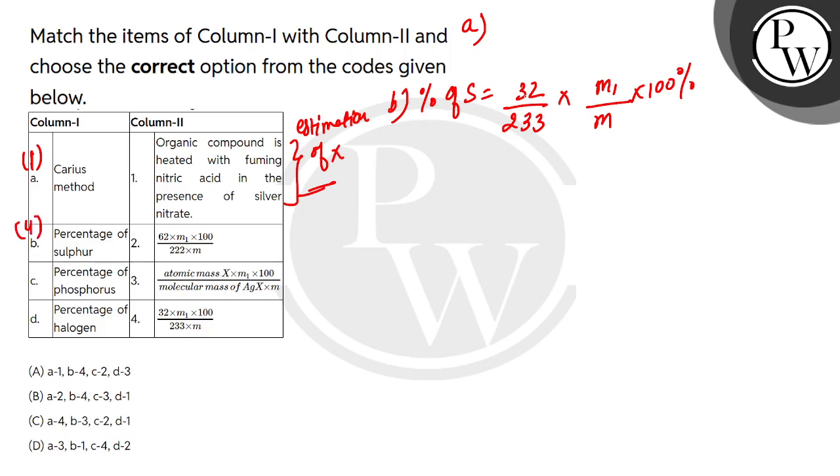Here, 32 is the molar mass of sulfur and 233 is the molar mass of barium sulfate. In C, we see that the percentage of phosphorus.